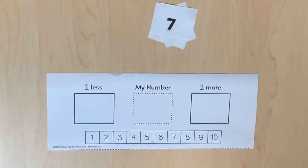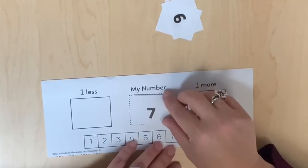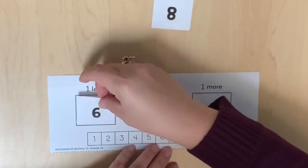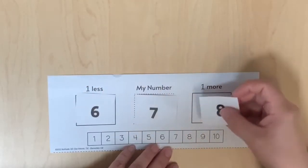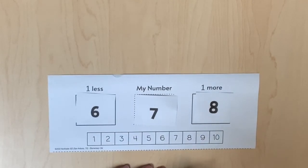As students become more proficient with the use of number paths, they can simply use number cards to generate a starting quantity and proceed by identifying a number that is one more than and one less than the starting quantity. Once again, if needed, number paths can still be used to represent each quantity and generate values that are one more than or one less than the starting quantity.